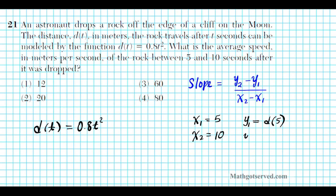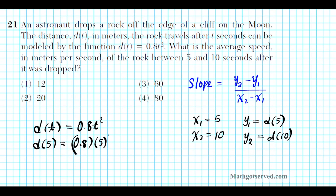Y2 is simply what you get when you plug in x2 into the function, which is d of 10. Now let's find y1, or d of 5. d of 5 is equal to 0.8 times 5 raised to the second power. You can use your calculator here, but make sure you use order of operations correctly — square first before you multiply.